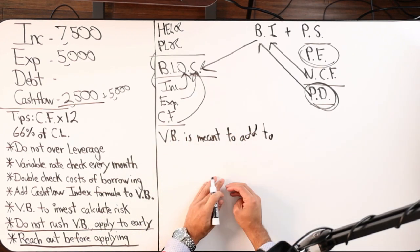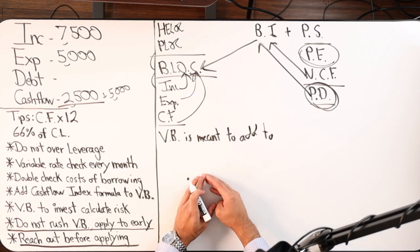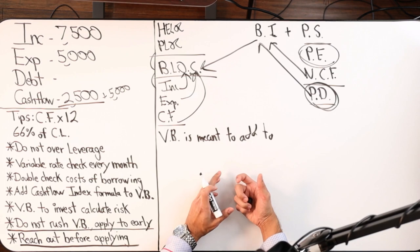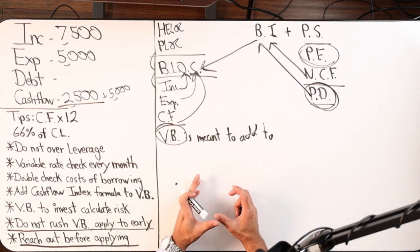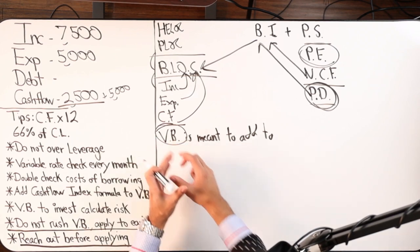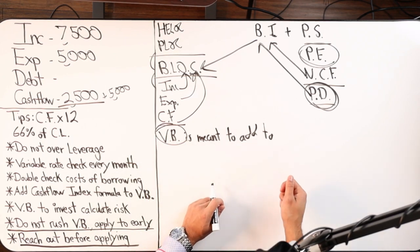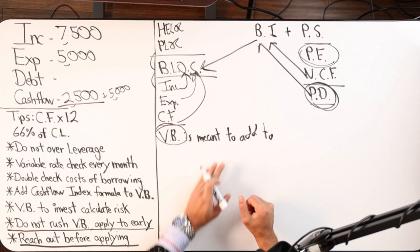Think of velocity banking as like a nitrous boost in a car. Velocity banking isn't the whole car. Your personal foundation is the whole car. Velocity banking is you throwing in some nitrous into the vehicle and it's just going to take you on a whole trip.